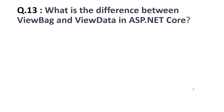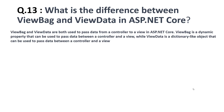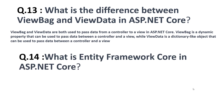The thirteenth question is: what is the difference between ViewBag and ViewData in ASP.NET Core? ViewBag and ViewData are both used to pass data from a controller to a view. ViewBag is a dynamic property that can be used to pass data between a controller and a view, while ViewData is a dictionary-like object that can also be used to pass data between a controller and a view.